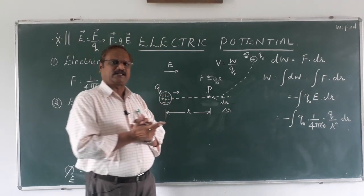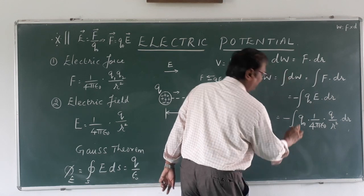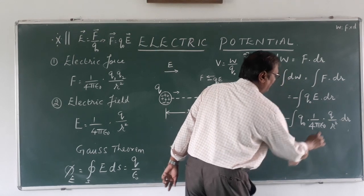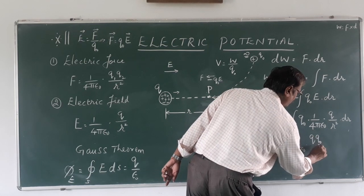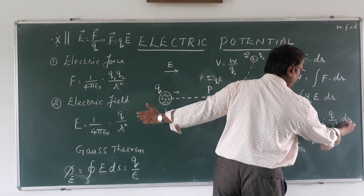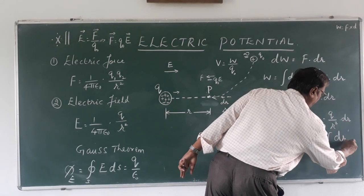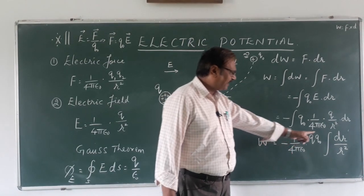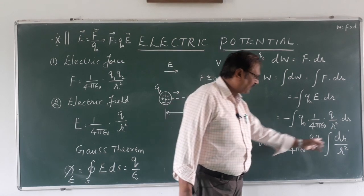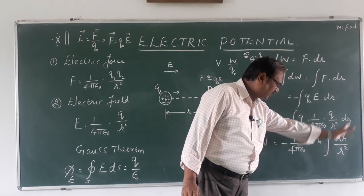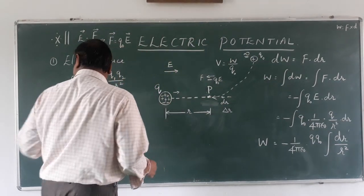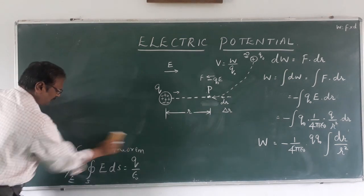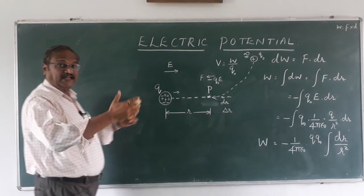1 upon 4 pi epsilon naught is a constant, so we take it outside. q and q naught are also constants and are taken outside. The variable is r and dr. So we have: dr upon r square inside the integration mark. This is the first stage to calculate the work done, with constants outside and only the variable dr and r square within the integration.